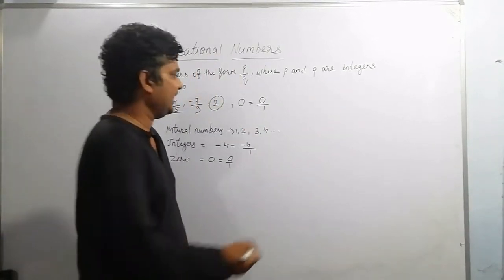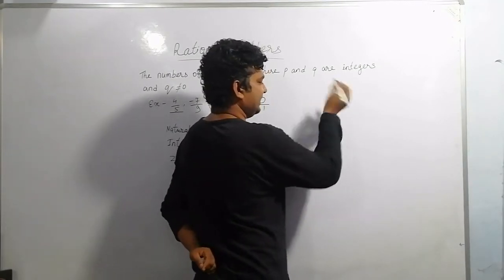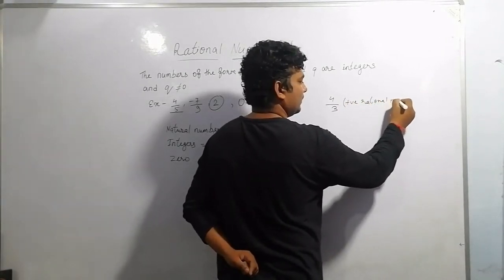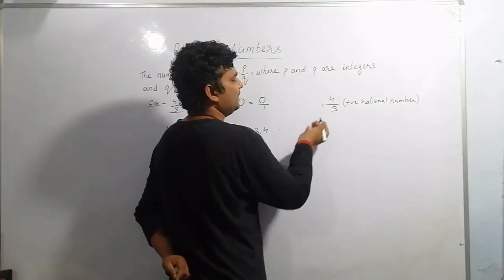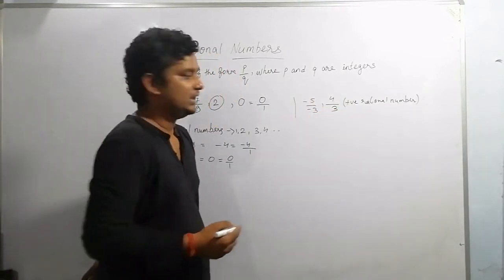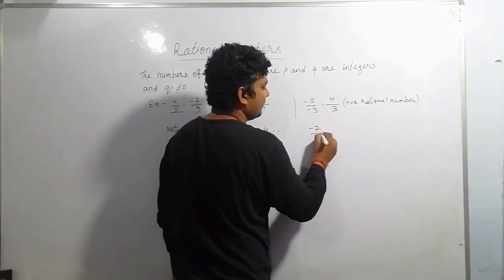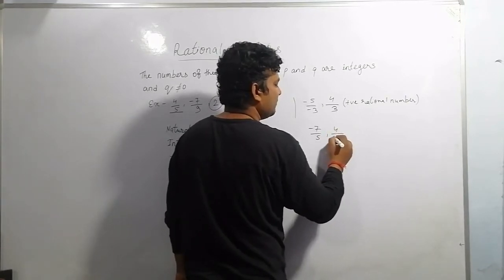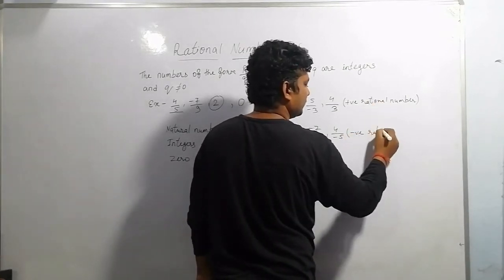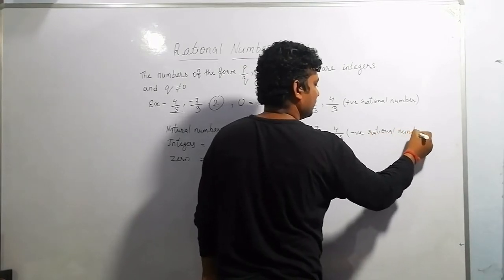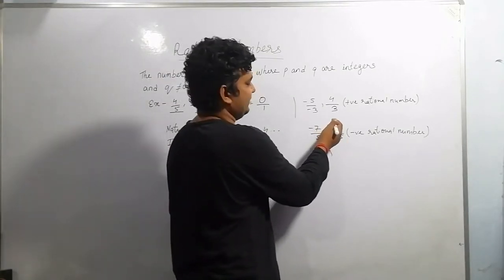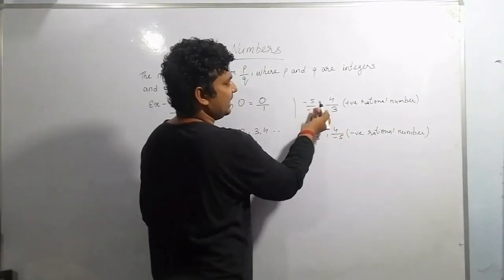We also have positive rational numbers and negative rational numbers. For example, minus 5 divided by minus 3 is a positive rational number, because minus multiplied by minus gives a positive result. Negative rational numbers include cases like minus 7 by 5 or 4 divided by minus 3. When we simplify, the negatives determine the final sign of the rational number.